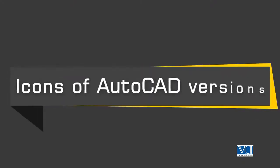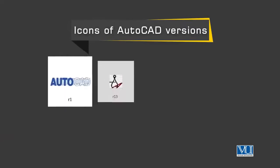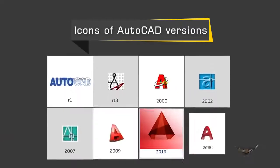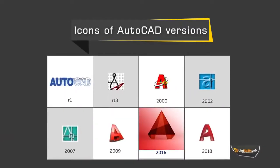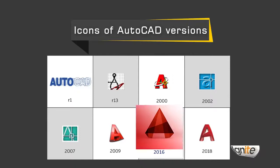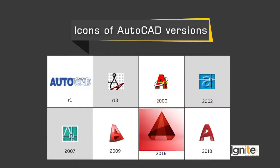Now we can see different icons. With the passage of time, right from 1982 till the present, products have been released one by one with different icons. This is the variant that we have evolved. In 2016, which we are going to use, we can see the icon. The latest 2018 icons are also available.